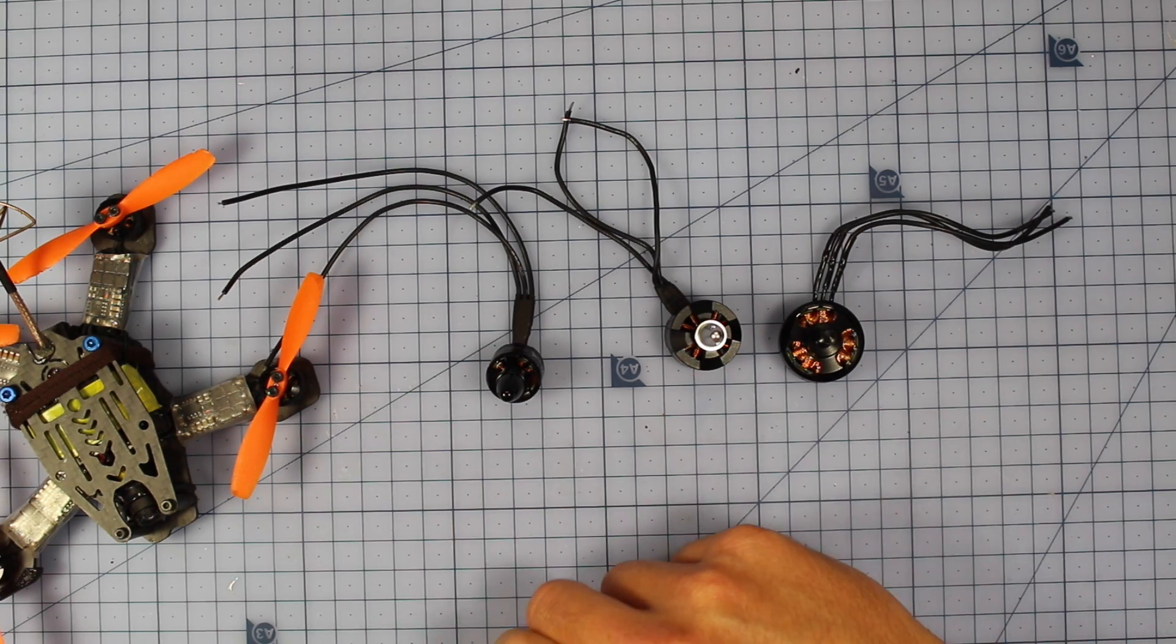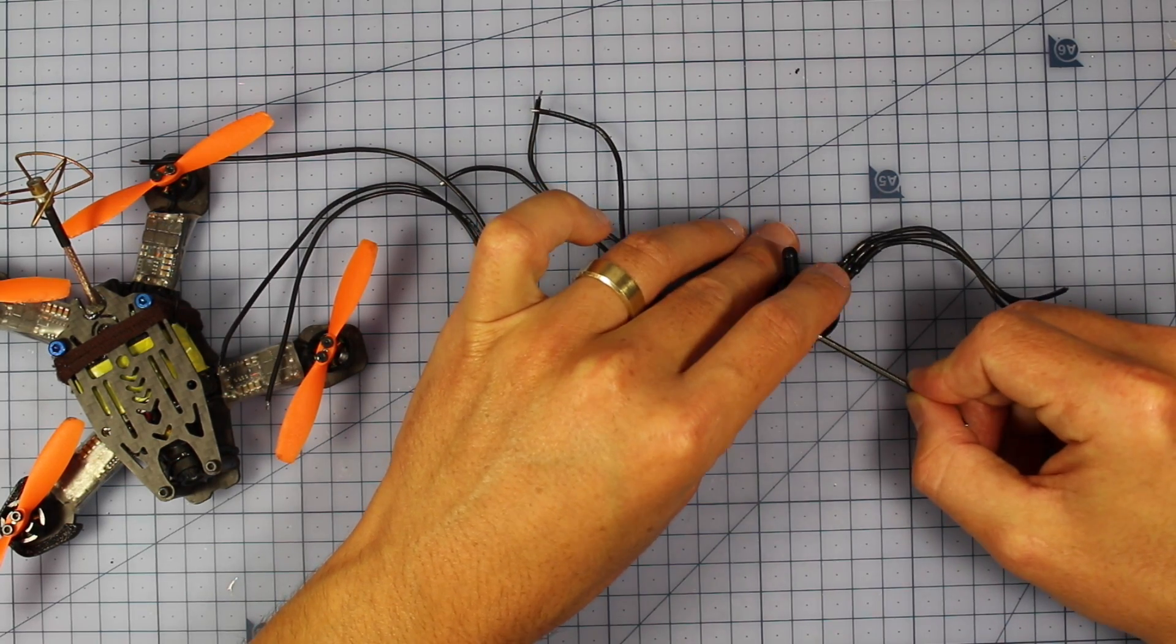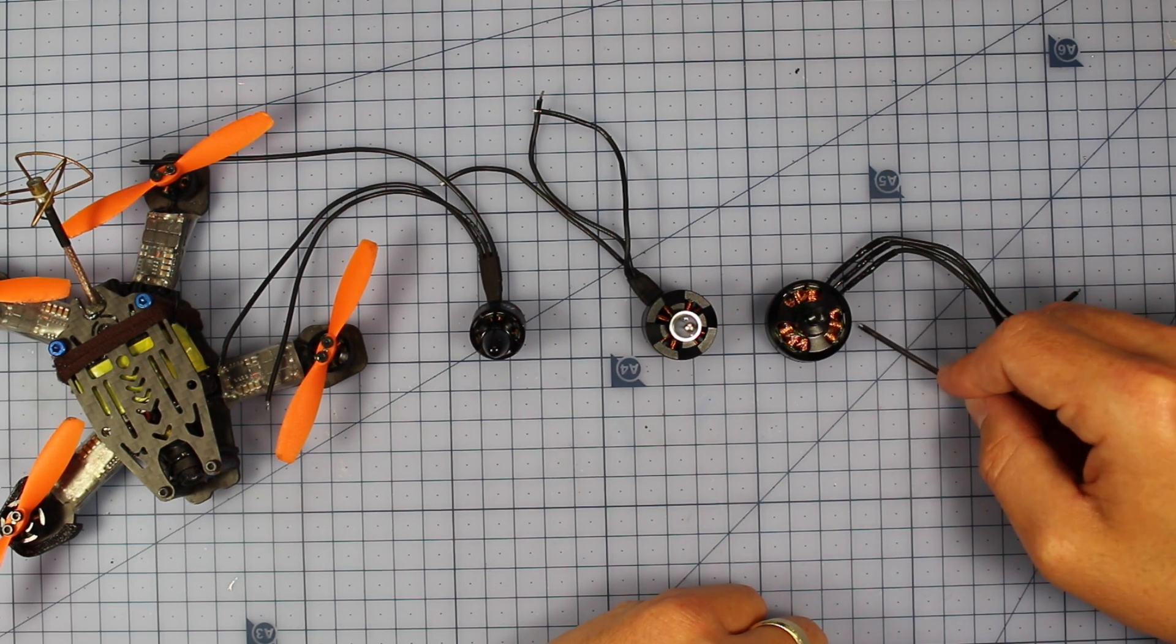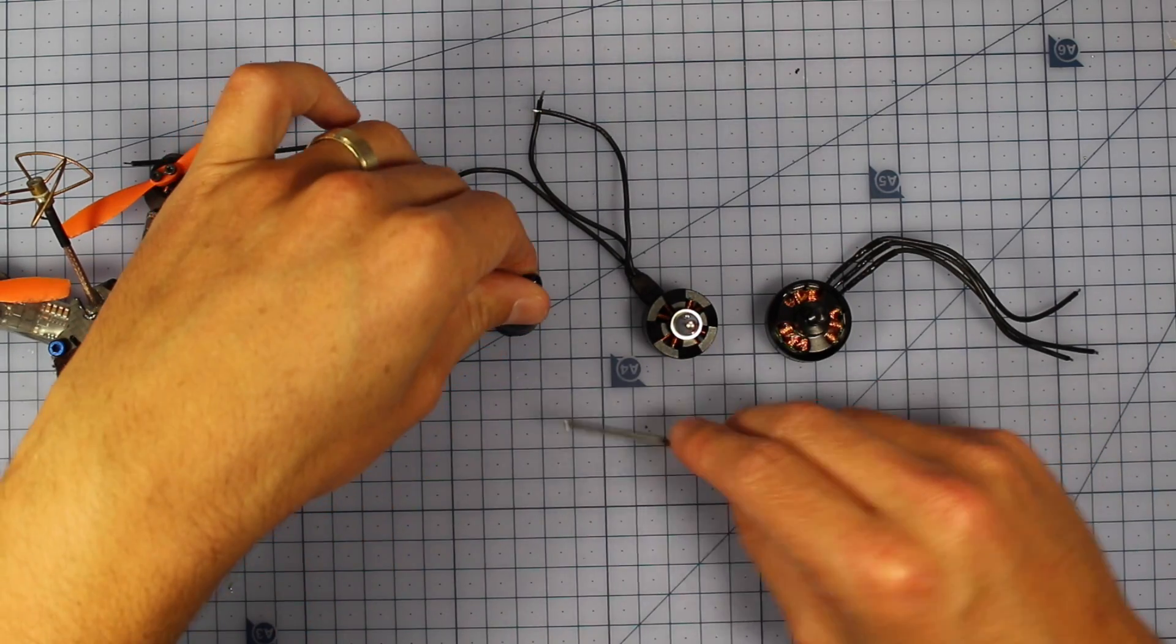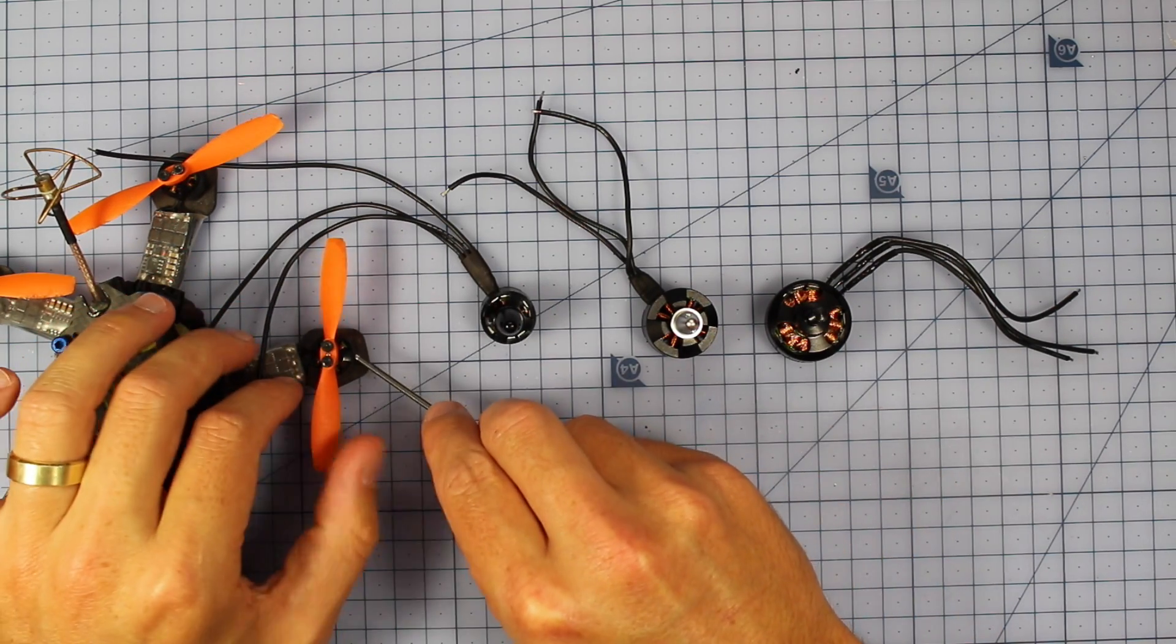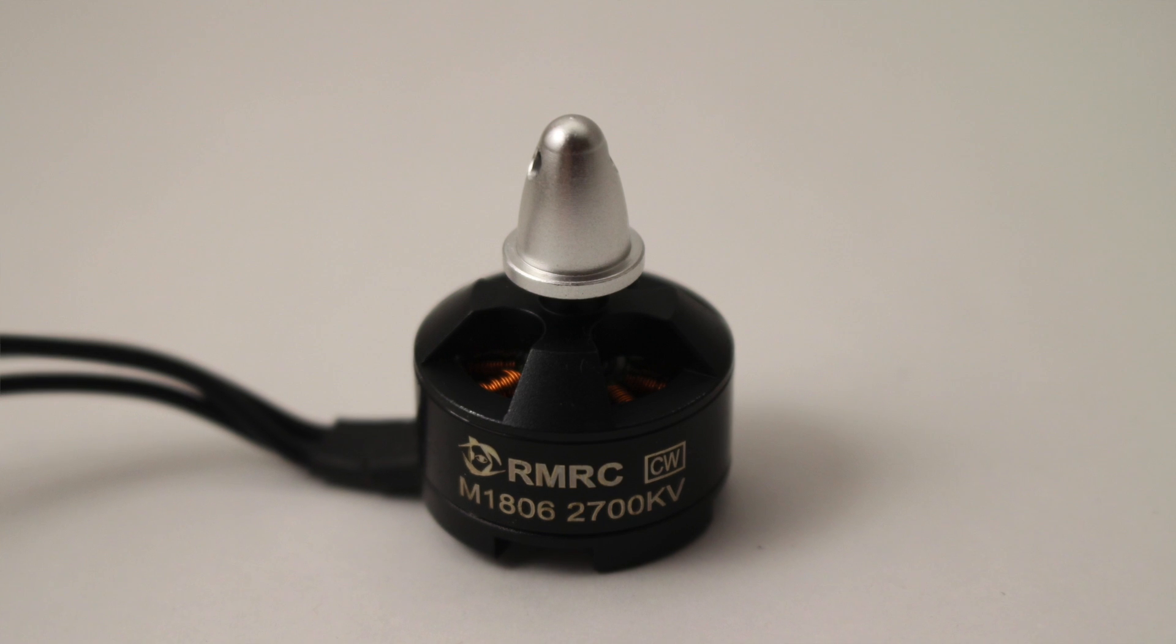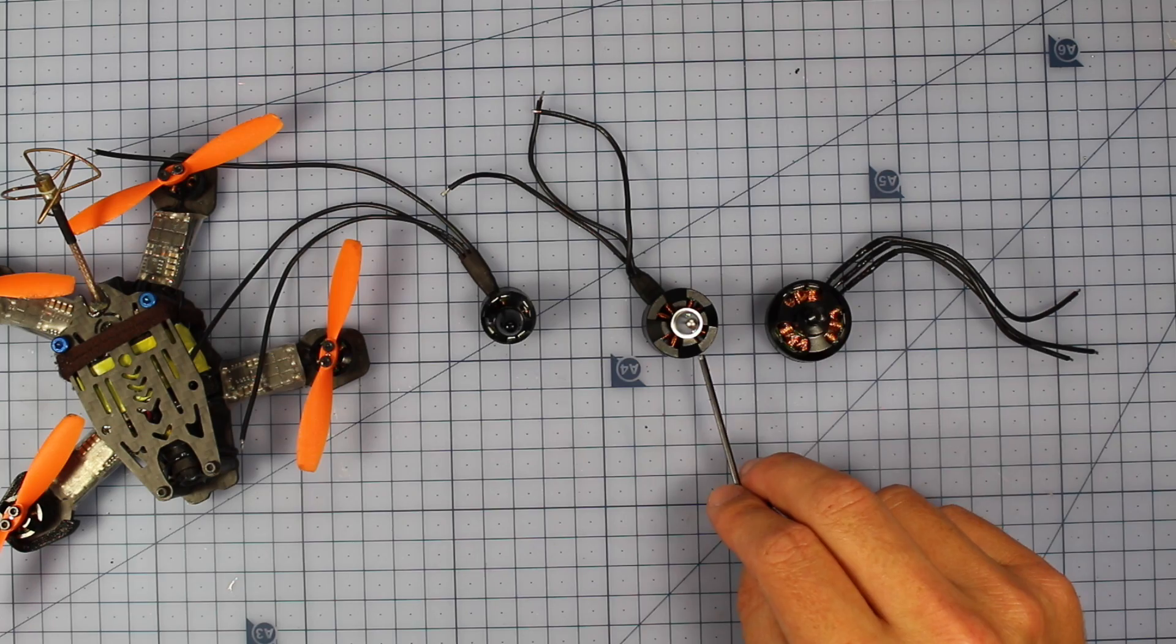The second part, the 2204, so the 04 part determines how high the stator is. It's 4mm tall, this one's 06 so 6mm, this one's 1306 so 6mm tall, and this one is 05. So the four numbers you first see when you read a motor, 1806 means it's 18mm across and the stator is 6mm high.